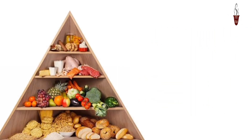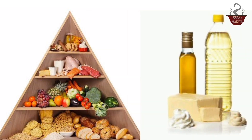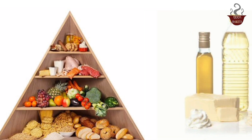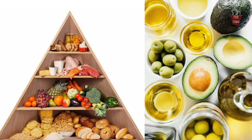Fats and oils — top level. Represents the smallest section, indicating limited consumption. Includes fats and oils from sources like nuts, seeds, and vegetable oils. Encourages healthy fats in moderation, such as those found in avocados and olive oil.